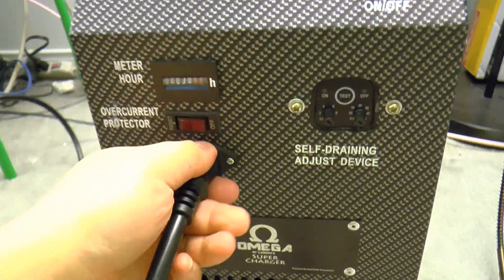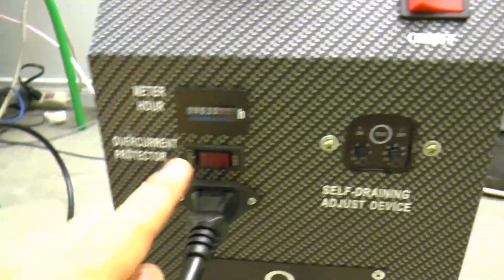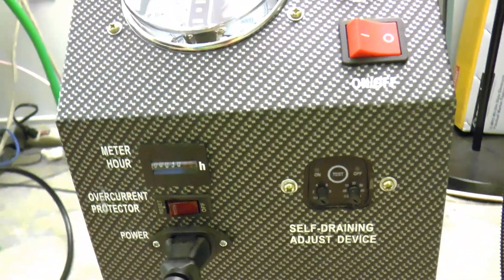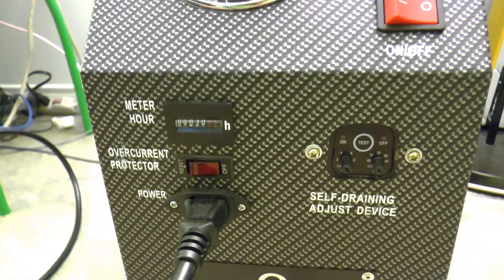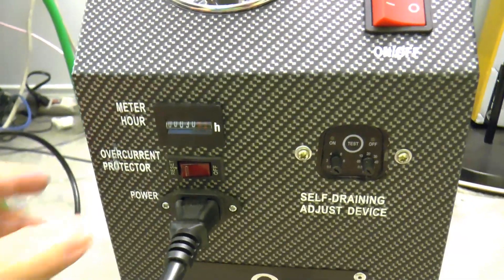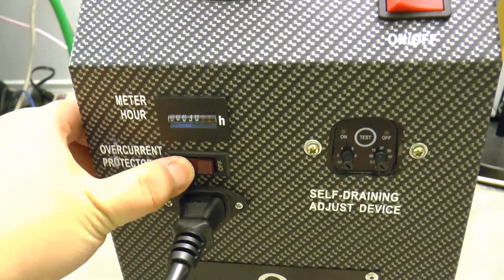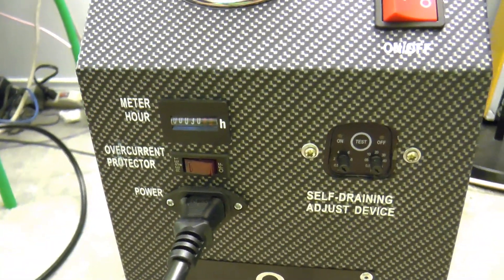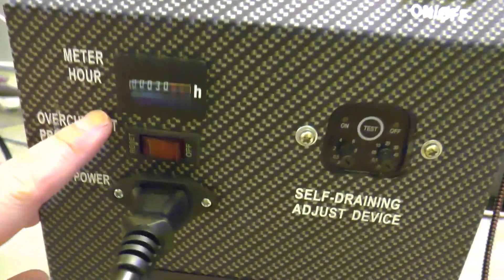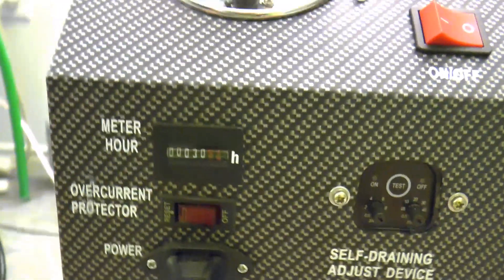One end of this cord plugs to the power supply, another one you just plug it into this hole. One thing is when you buy the thing, the breaker is set to off. I was kind of freaked out because you cannot turn the thing on. This one, you have to press the reset so that turn the machine on. Here, hour meter, you can see right now 30 hours.